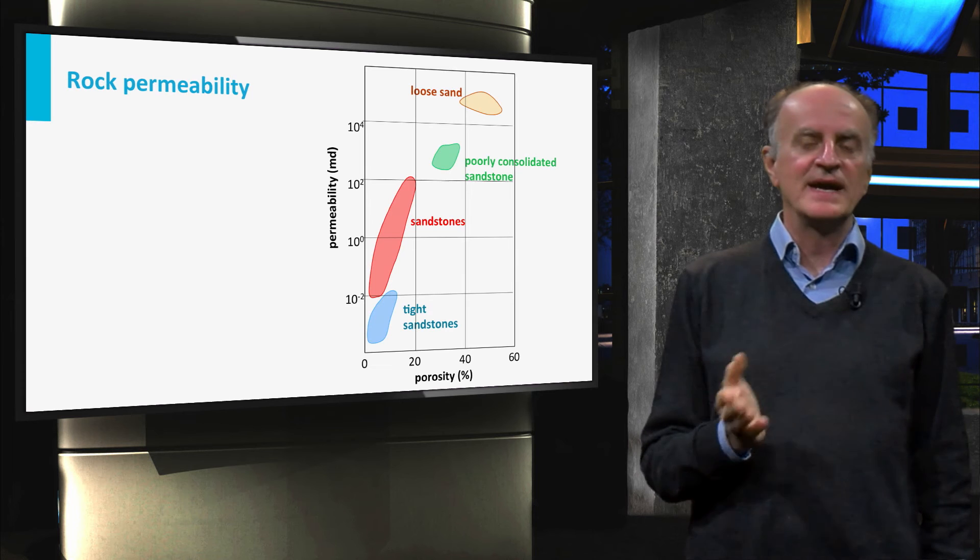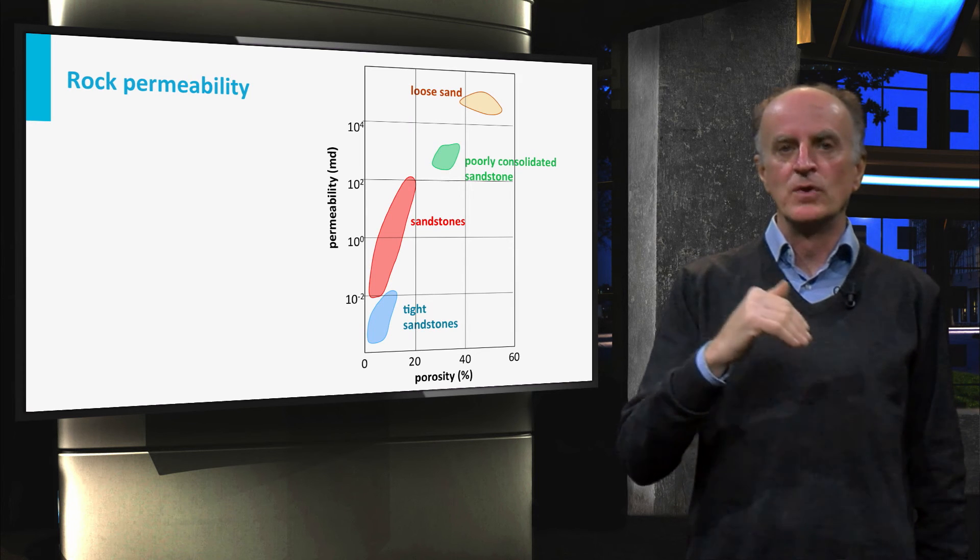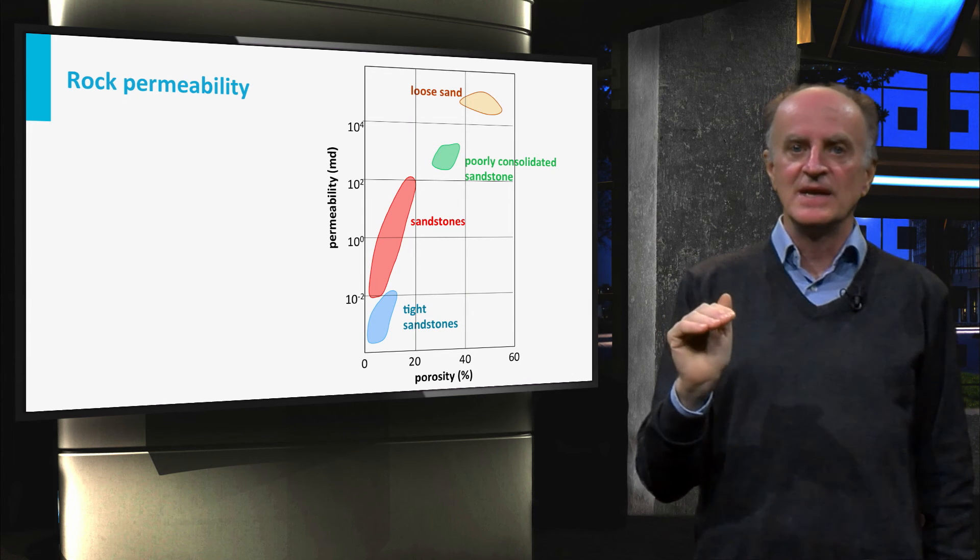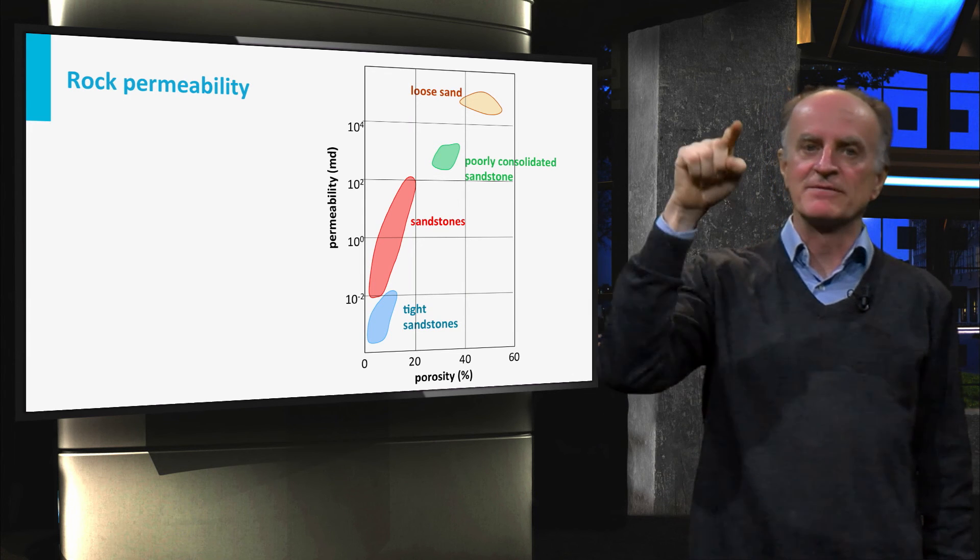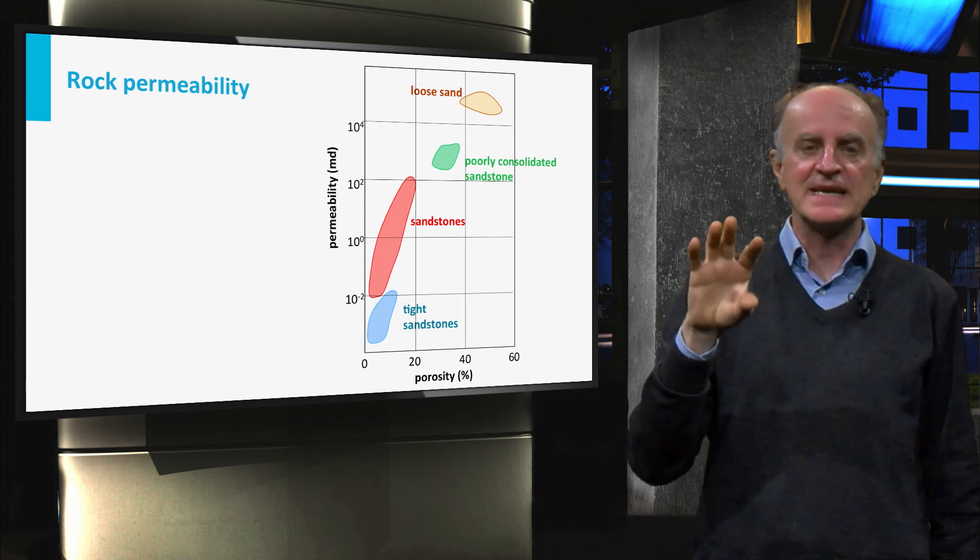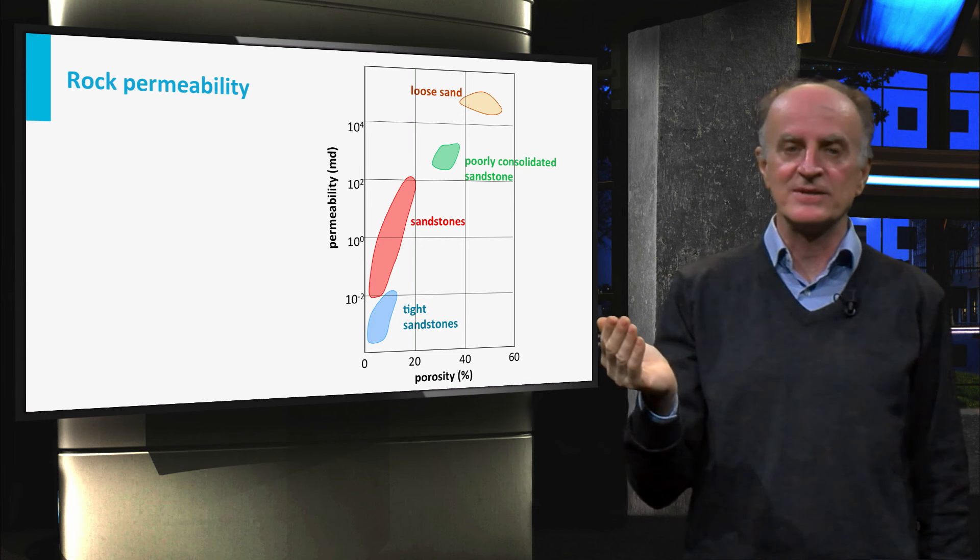Permeability is defined as the ability of a fluid to flow through a body of rock. Predicting permeability values is not easy. If we look at the vertical axis of the plot in the slide, you see that permeabilities of different types of sands vary up to 10 orders of magnitude.